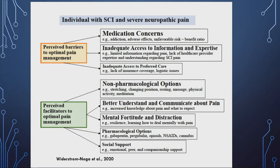People want to better understand and communicate about pain. There's a lot of information available for people with spinal cord injury, but not much specifically about pain. Having resilience and distraction abilities is considered very important. Some people use pharmacological options — the most common being gabapentin, pregabalin, and opioids — and many also use NSAIDs and cannabis. Social support is also considered very important.